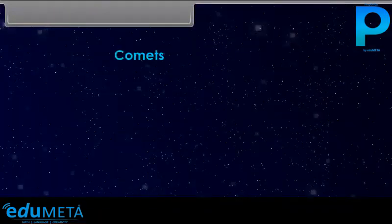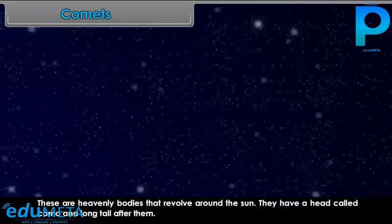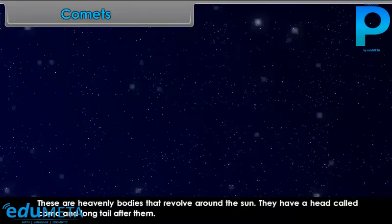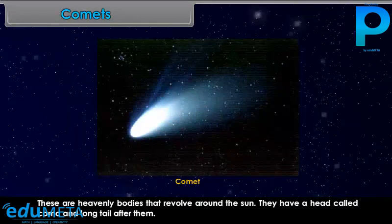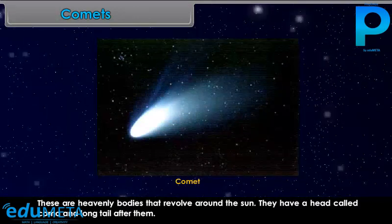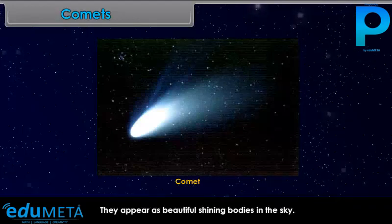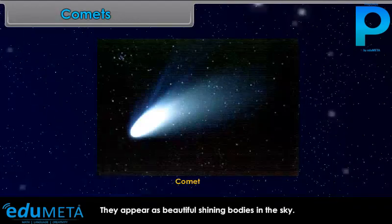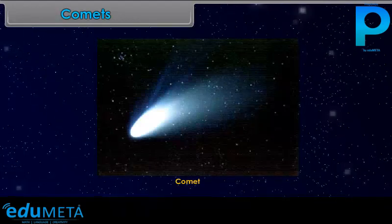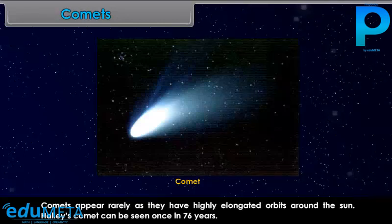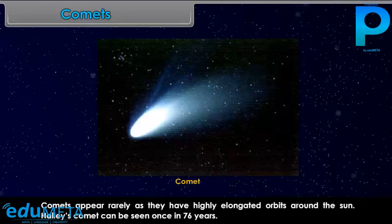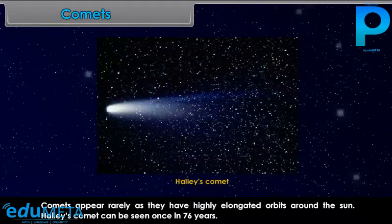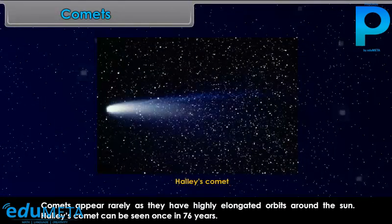Comets are heavenly bodies that revolve around the Sun. They have a head called Coma and a long tail after them. They appear as beautiful shining bodies in the sky. Comets appear rarely as they have highly elongated orbits around the Sun. Halley's comet can be seen once in 76 years.